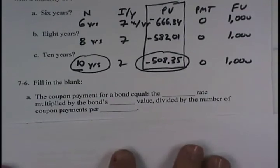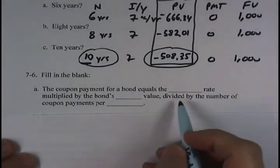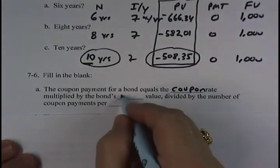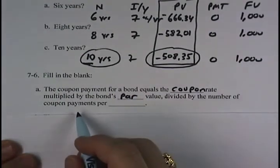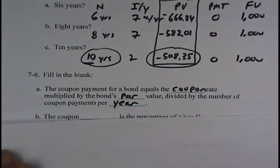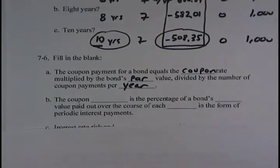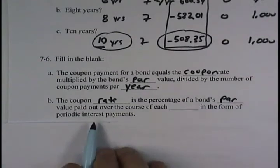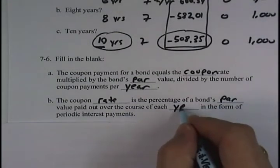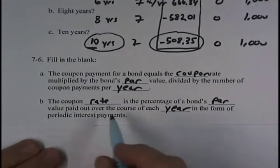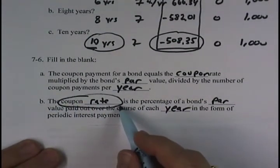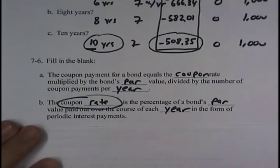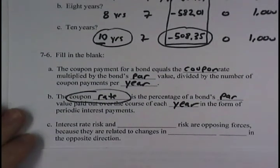Problem 7.6 is fill-in-the-blank. Part A says, the coupon payment for a bond equals the coupon rate multiplied by the bond's par or face value divided by the number of coupon payments per year. Part B, the coupon rate is the percentage of the bond's par or face value paid out over the course of each year in the form of periodic interest payments. In other words, the coupon rate is for an entire year. Coupon payments might be made semi-annual, and often they are, but the coupon rate is quoted for the entire year.